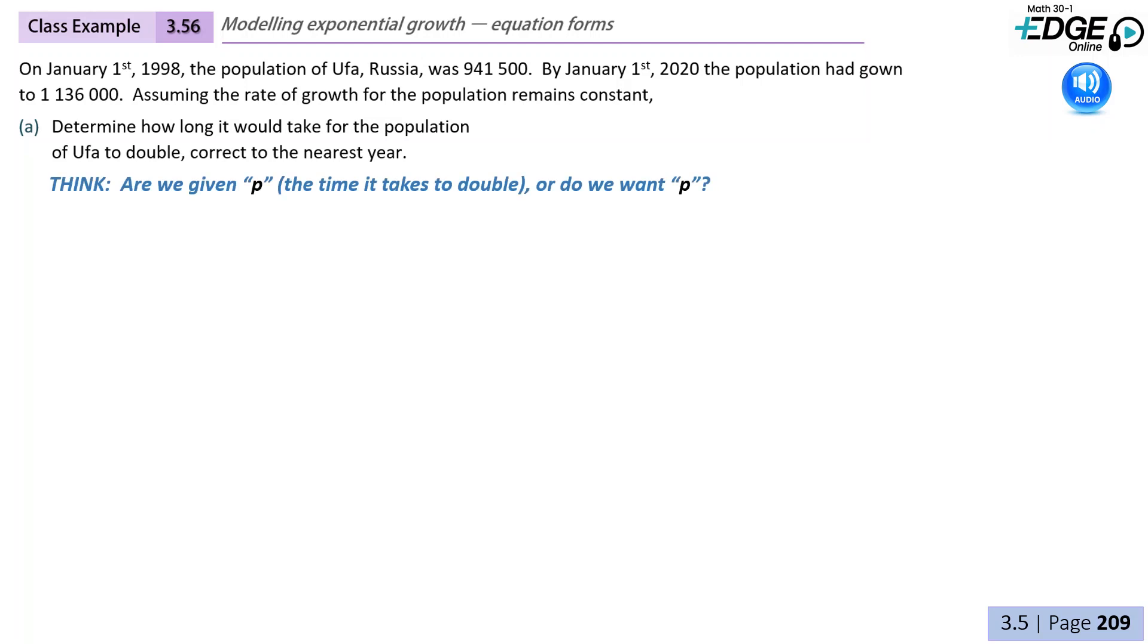So think about this question, whether or not we are given P, which is the time it takes to double, or do we want P? So if we think about this, we're given the end amount and the initial amount. Our multiplier, or our B value, is going to be 2 because we want to know the amount of time for it to double.